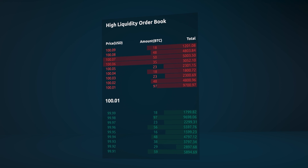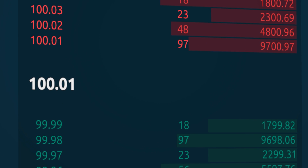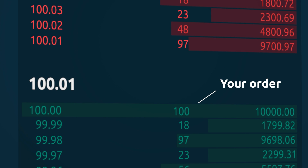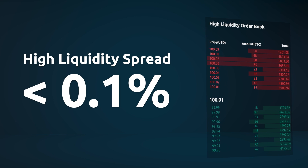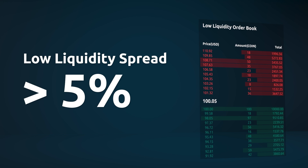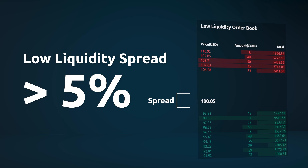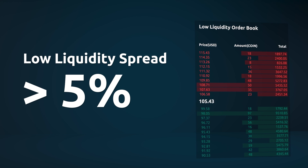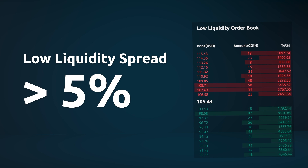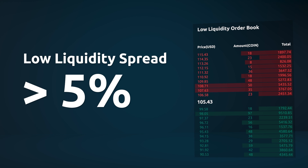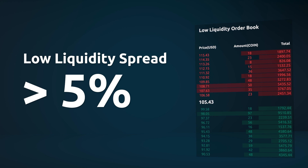If you wanted to buy $10,000 worth of Bitcoin, you would be able to do it quickly and at the moment you wanted, for the price you wanted, and the impact your order would have would probably be less than 0.1% price increase. But try to use the same $10,000 to buy a small cap coin — the market is way less liquid and it might be hard to execute the trade at the price you wanted. Also, the impact of your order could go beyond 5 or 10%. But why does liquidity matter?